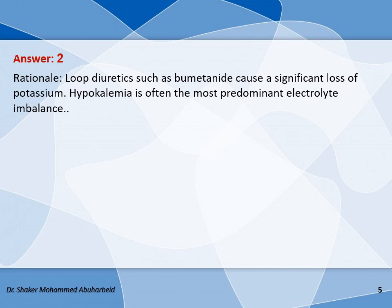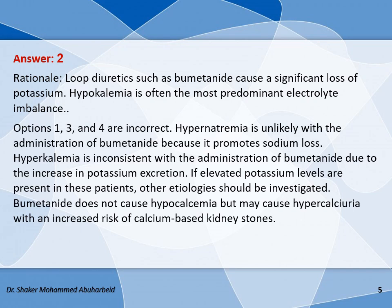Loop diuretics such as bumetanide cause significant loss of potassium; hypokalemia is often the predominant electrolyte imbalance. Options one, three, and four are incorrect. Hypernatremia is unlikely because bumetanide promotes sodium loss. Hyperkalemia is inconsistent with bumetanide due to increased potassium excretion; if elevated potassium is present, other etiologies should be investigated. Bumetanide does not cause hypocalcemia but may cause hypercalciuria with an increased risk of calcium-based kidney stones.